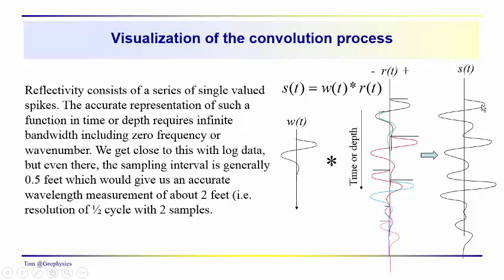Very often we like to work backwards from the seismic trace to try and figure out what the reflectivity is, or perhaps the impedances, and that gives us more specific information about velocity, lithology, fluid content, and so on. The trace is just a superposition of all these wavelets scaled by the reflection coefficients and summed together to get the seismic signal.